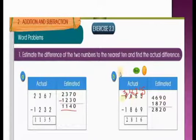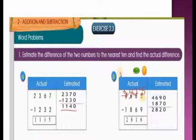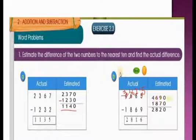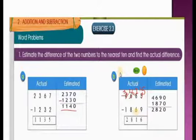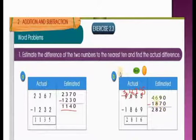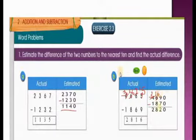Now we have to estimate. Is 85 nearest to 80 or 90? Since 5 is there, we round up — so 85 is nearest to 90, giving 4,690. And 1,869: is 69 nearest to 60 or 70? Yes, it is nearest to 70, so 1,870. Finding the difference: 0 minus 0 is 0; 9 minus 7 is 2; 6 is smaller than 8, so borrow from 4 — it becomes 3 and this becomes 16. 16 minus 8 is 8; 3 minus 1 is 2. The estimated difference is 2,820.